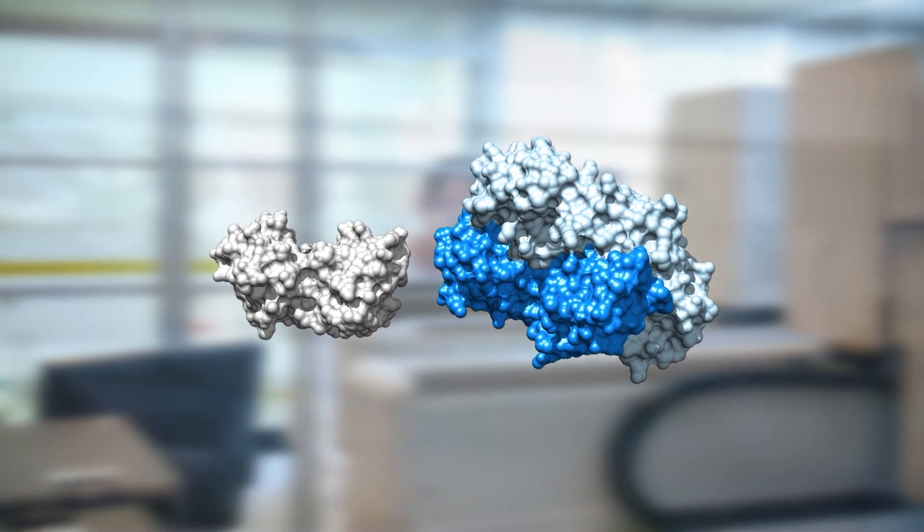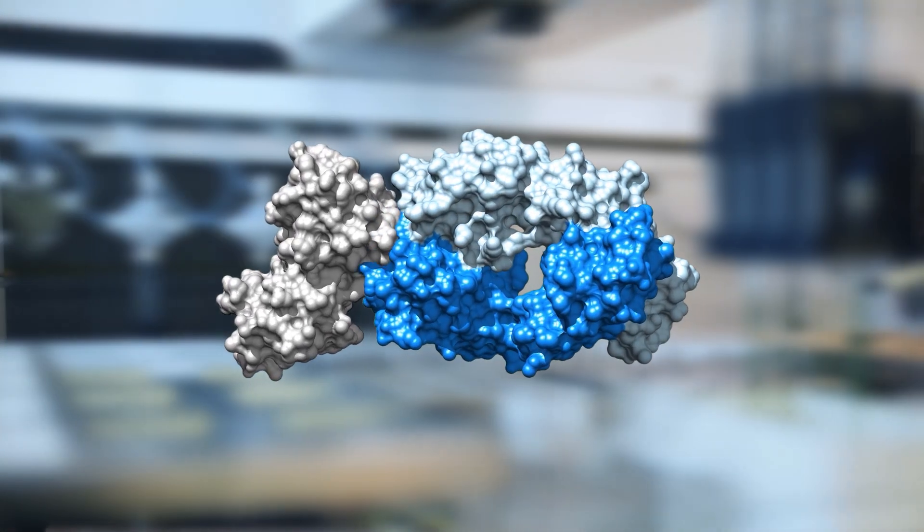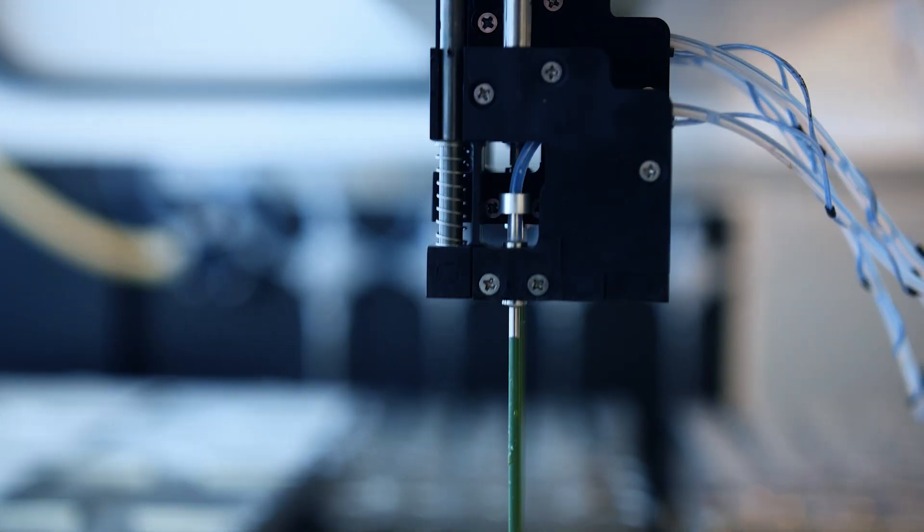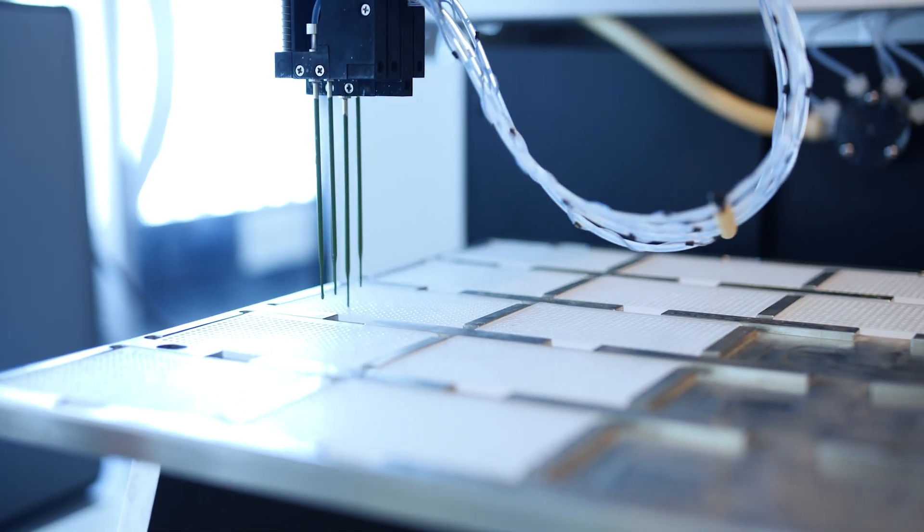Epitope mapping defines the binding site of your antibody on the antigen target. It can help you understand how your antibody works, and importantly, it can help you protect your potential antibody drug in patents, a key aspect when looking for a partner to commercialize your antibody.